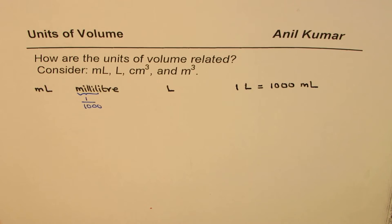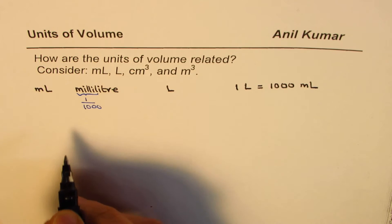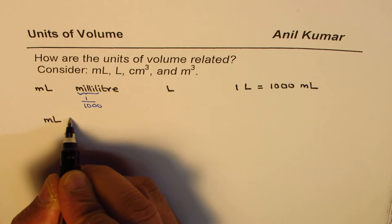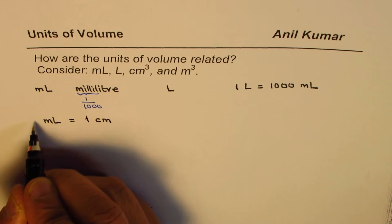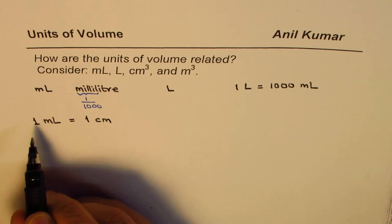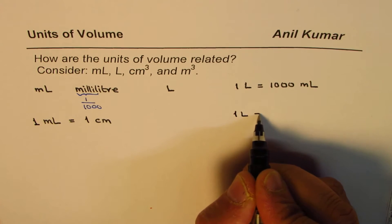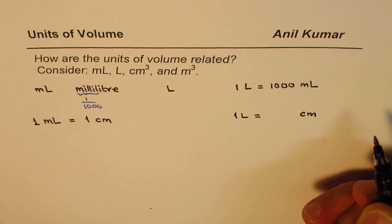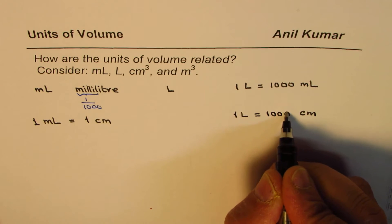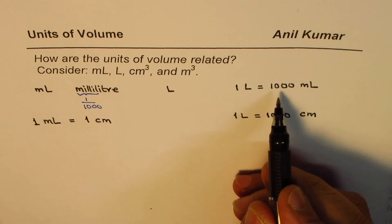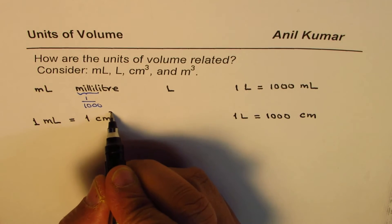Now let us consider milliliter and centimeter cube. In the metric system we normally use centimeters. One milliliter is actually equal to one centimeter cube, so they are directly related one to one. Since one liter is one thousand milliliters, one liter is also one thousand centimeter cubes.